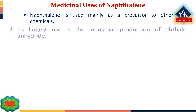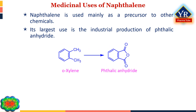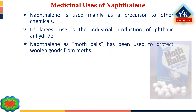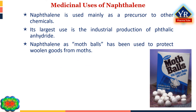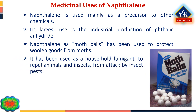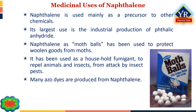Naphthalene is used mainly as a precursor to other chemicals. The single largest use is the industrial production of phthalic anhydride, although more phthalic anhydride is made from ortho-xylene. Naphthalene as mothballs has been used to protect woollen goods from moths for many years. It has also been used as a household fumigant in attic spaces to repel animals and insects, and in storage dryers and cupboards to protect contents from insect pests.